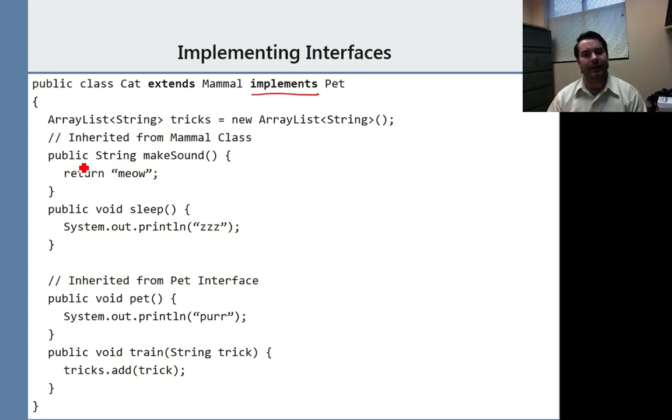Now here's where things kind of start to differ. Extends is my abstract class. I am only allowed one superclass, so mammal. I can't have feline as well. I can only extend one class. However, I am able to implement any number of interfaces.